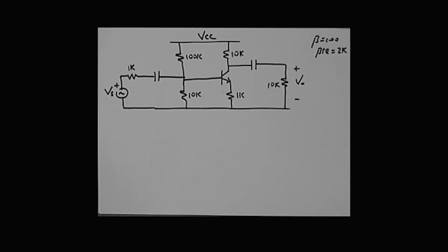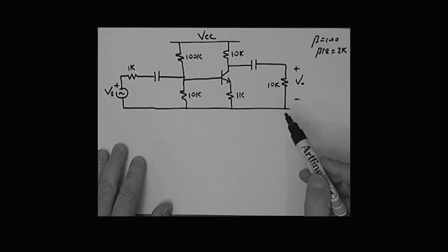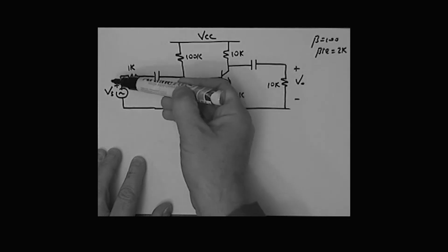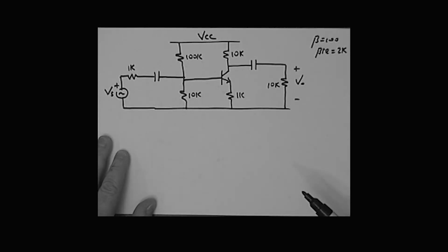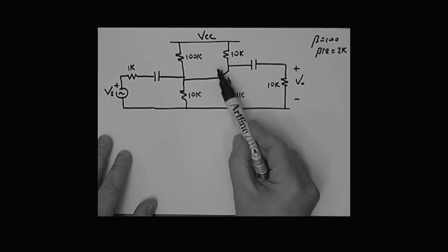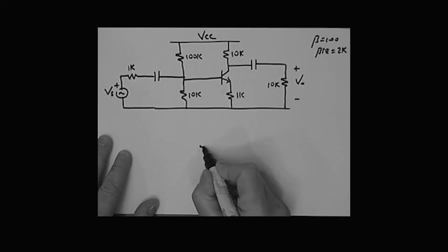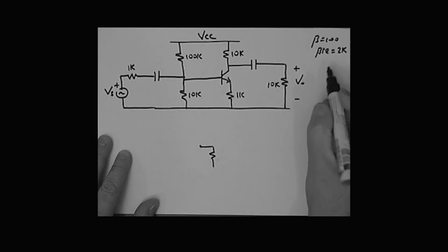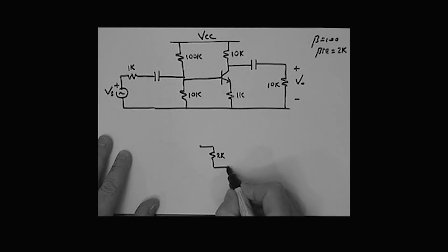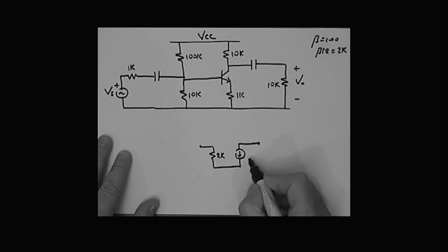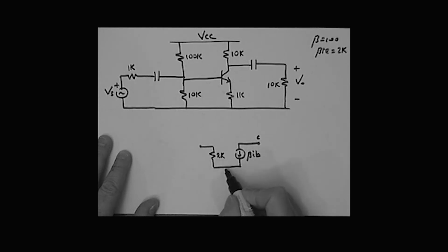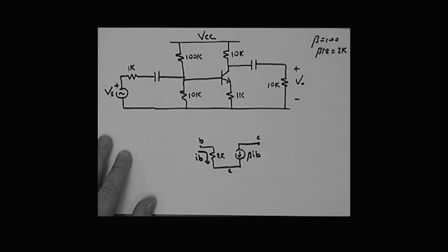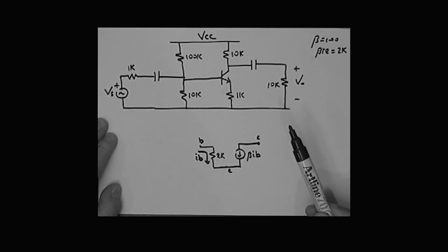Let's consider another example. I want you to look at this circuit - once again what we're required to do is determine the voltage gain, which is this output voltage divided by this input voltage. Our first step will be to draw the AC equivalent circuit. You're going to start by putting down the model for the transistor: here it is with beta·r_e of 2k. This is beta times I_B, this is the collector, this is the emitter, and this is the base with base current I_B flowing in.